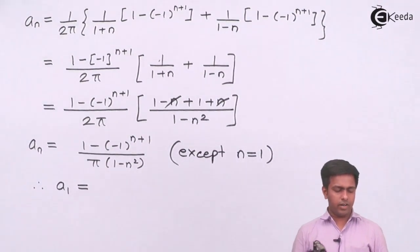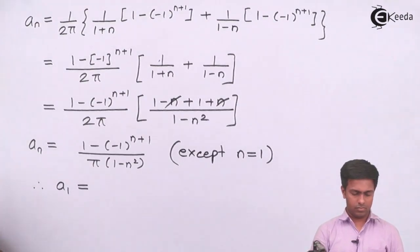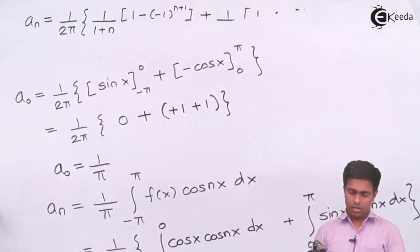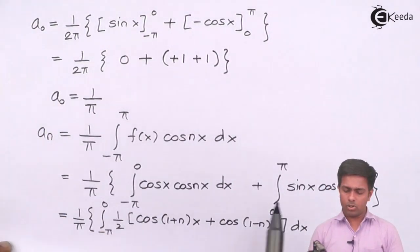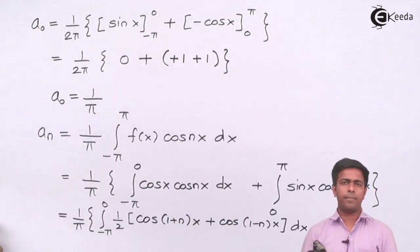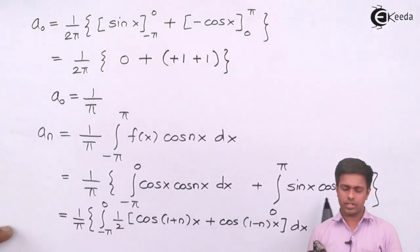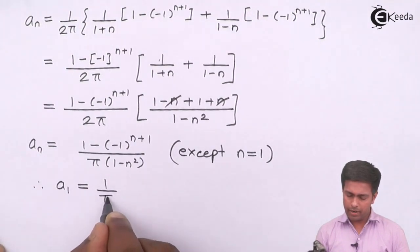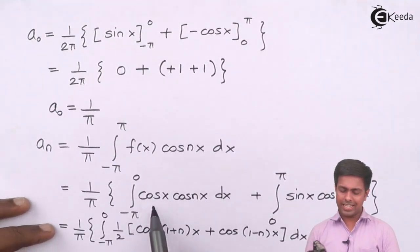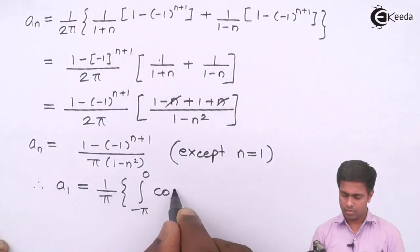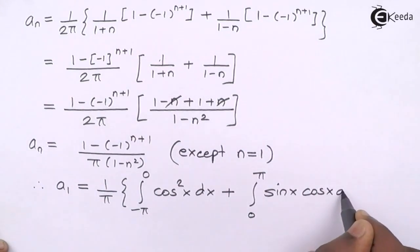To find a₁, substitute n = 1 into the integral: a₁ = 1/π [∫₋π⁰ cos(x)·cos(x) dx + ∫₀π sin(x)·cos(x) dx] = 1/π [∫₋π⁰ cos²(x) dx + ∫₀π sin(x)cos(x) dx].